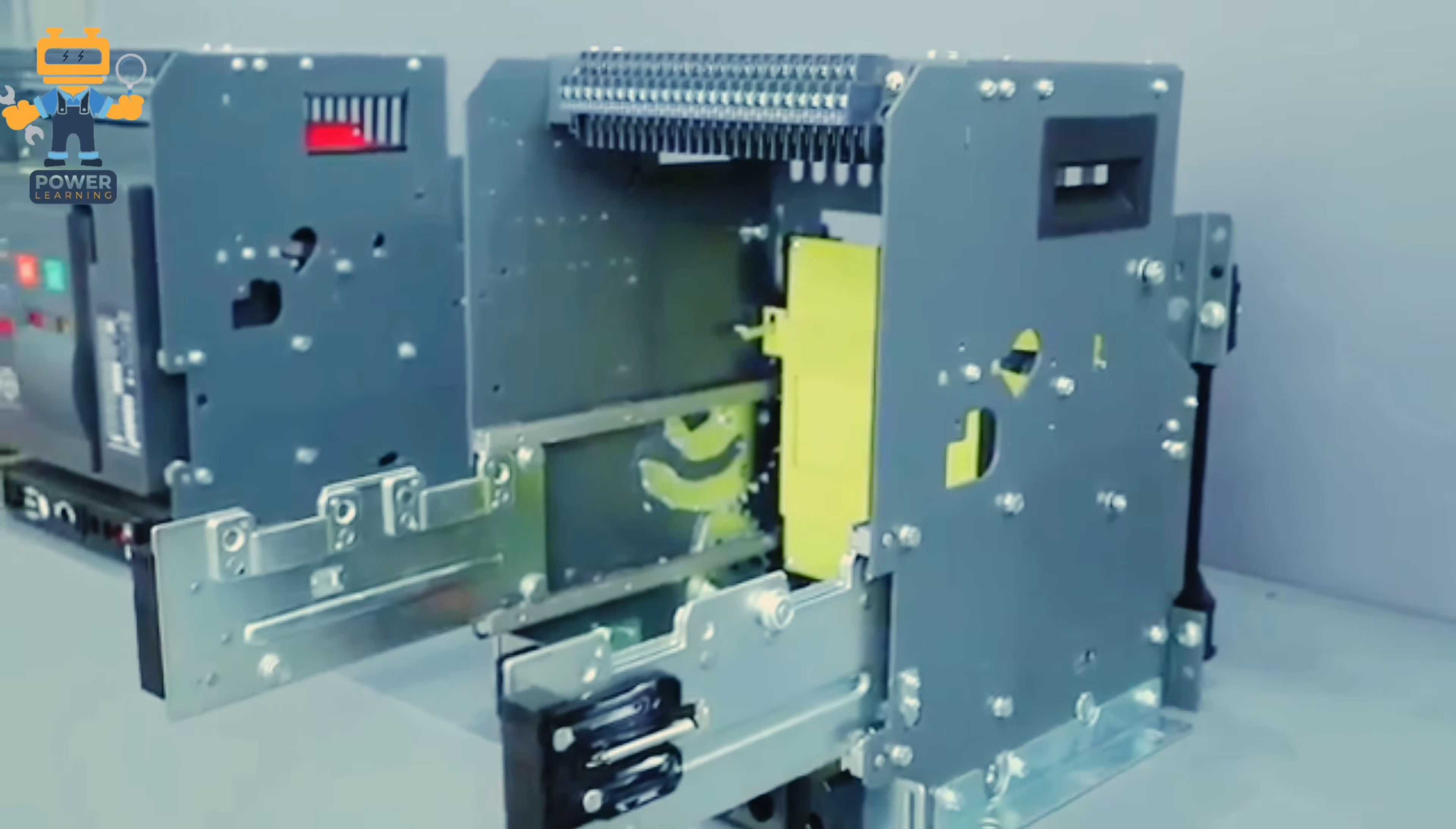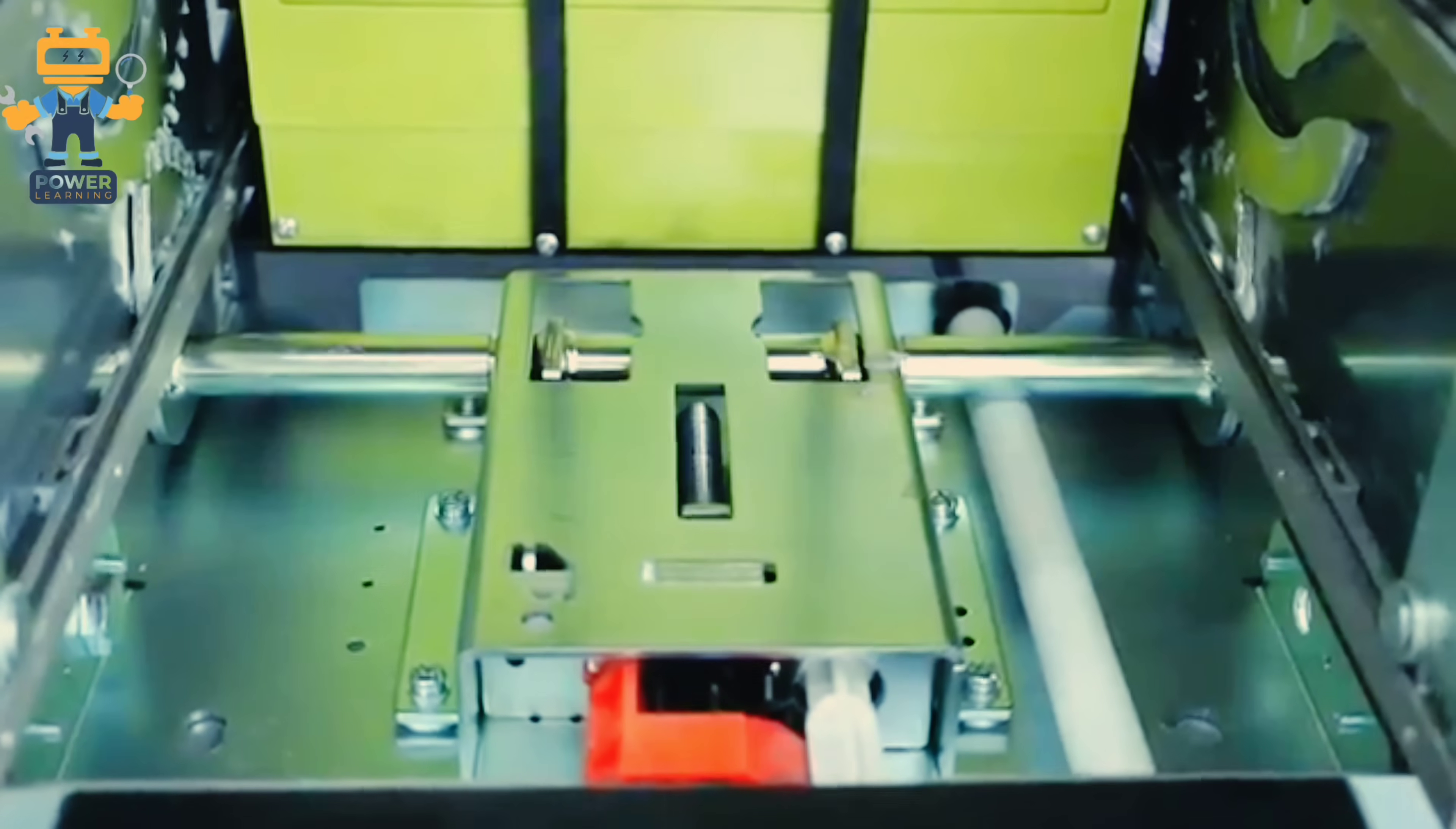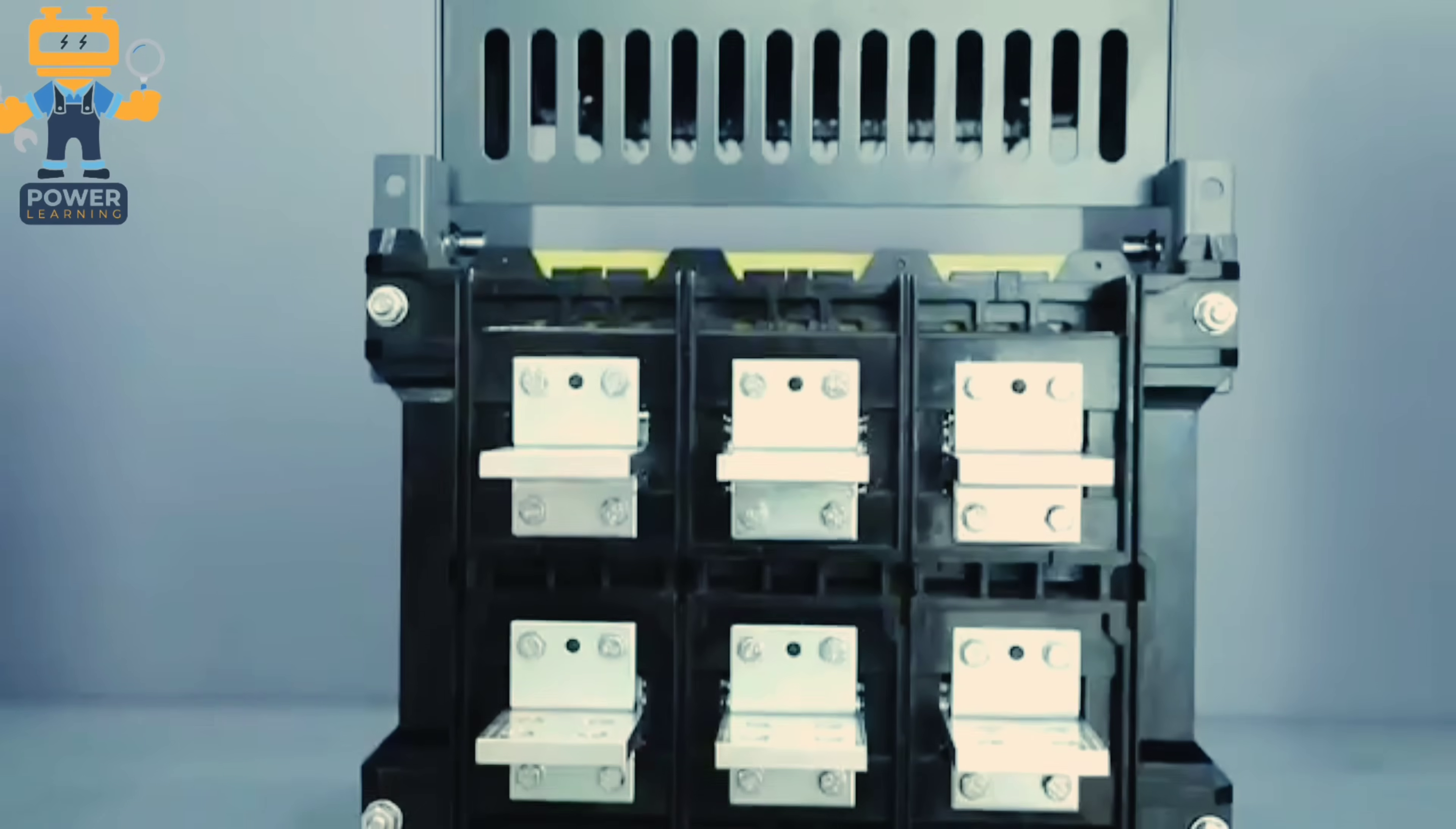This kind of ACBs we have two types of breakers. One is fixed type and one is removable type. Removable type we call draw-out, and fixed type which is fixed inside the frame. Draw-out type we can remove easily, and fixed type we cannot do it without removing the bus bars.